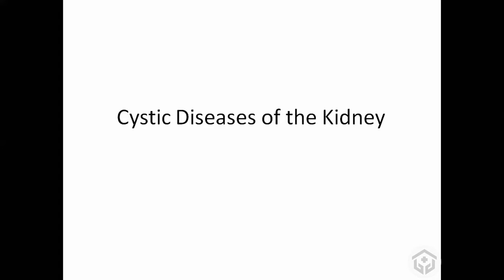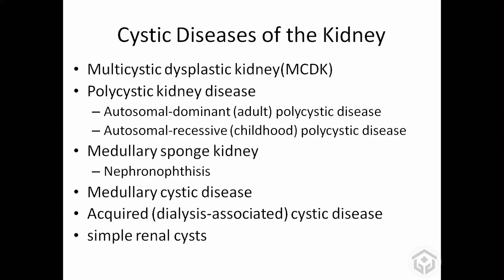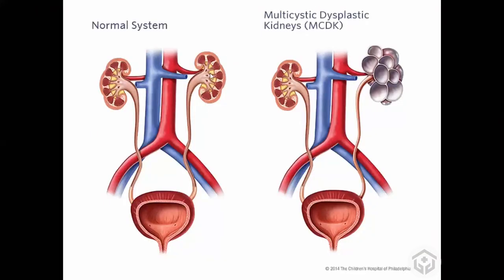We are moving to the next topic: cystic diseases of the kidney. One condition already discussed is where the collecting system and metanephrons fail to fuse together, so the fetus will have multiple cysts in the kidney. That kidney is not working at all - this is unilateral multicystic dysplastic kidney. If someone has bilateral multicystic dysplastic kidney, they can't survive.